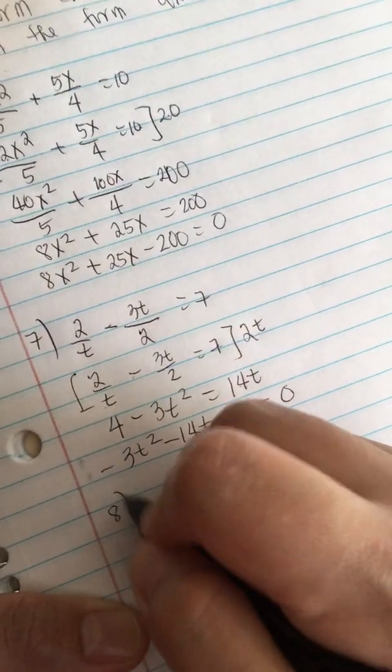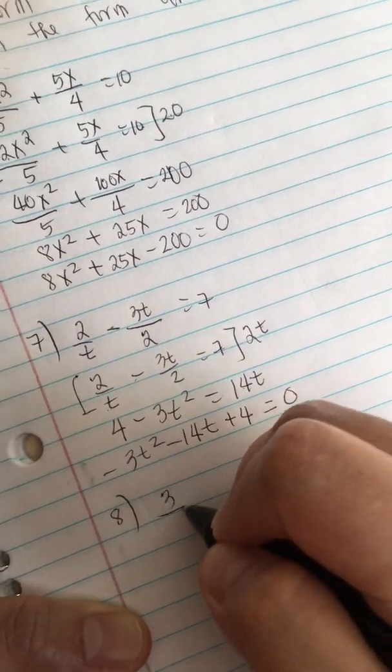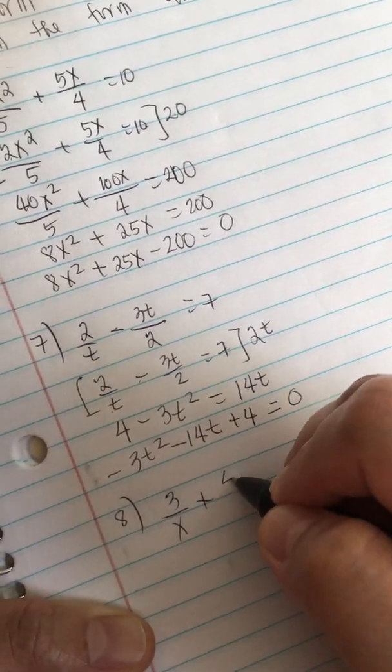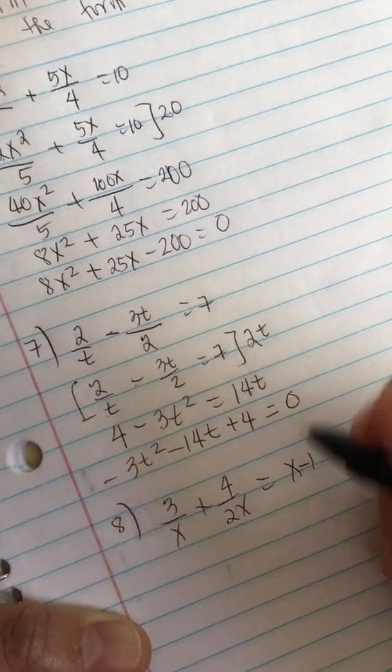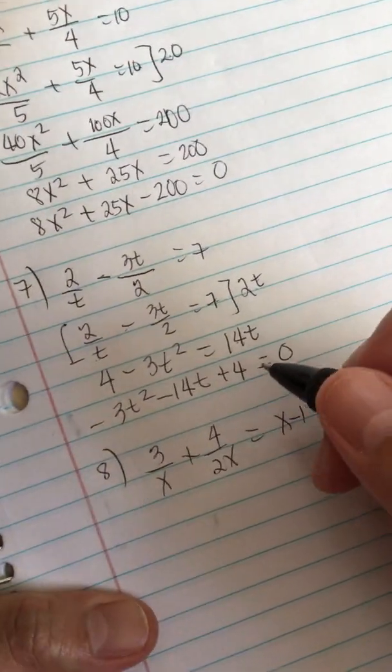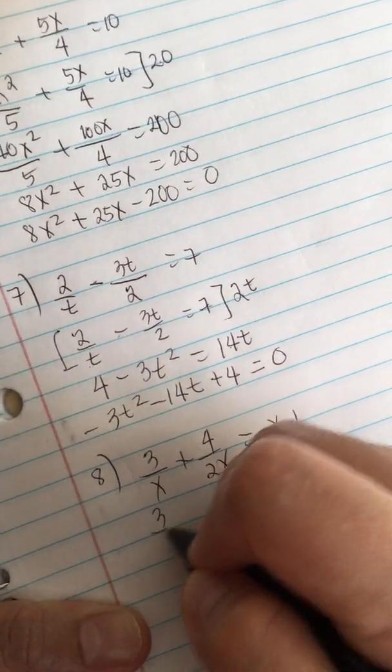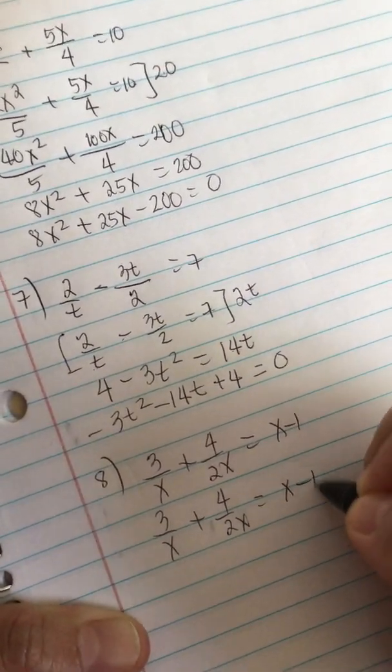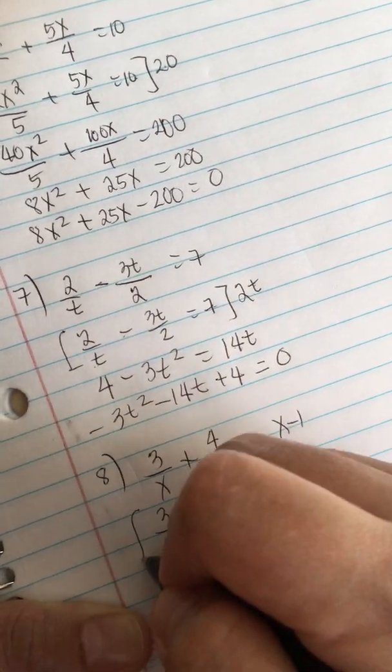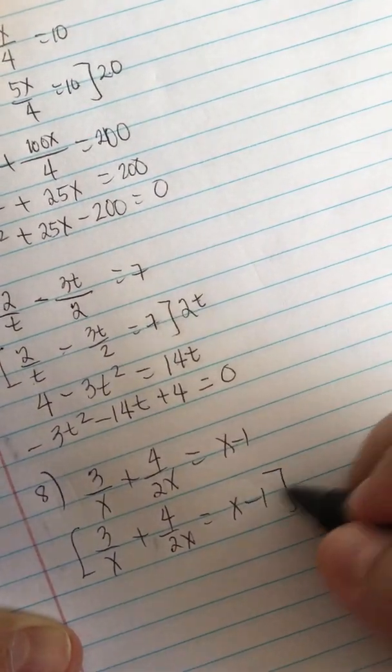Number 8: We have 3 over x plus 4 over 2x equals x minus 1. We do the same thing. We multiply the entire equation by 2x.